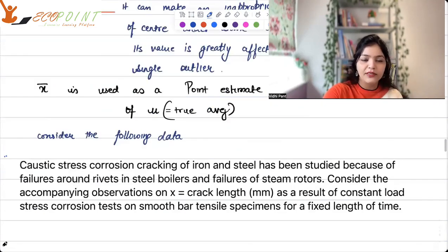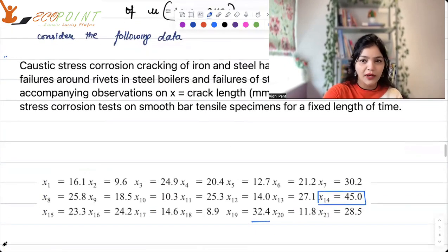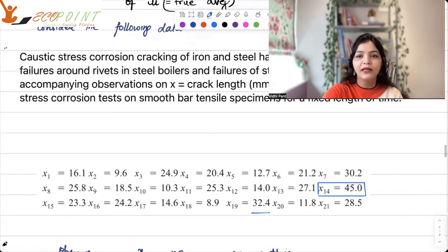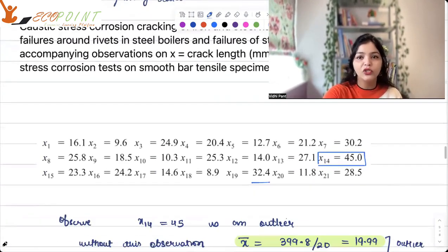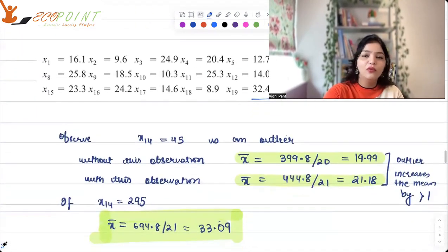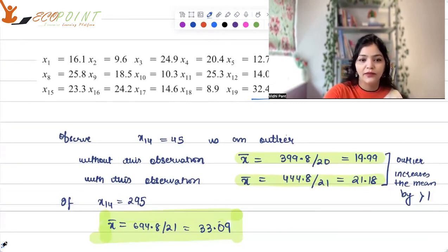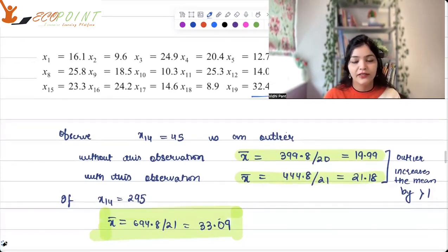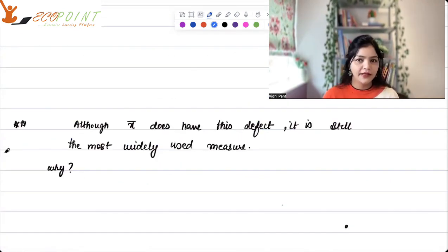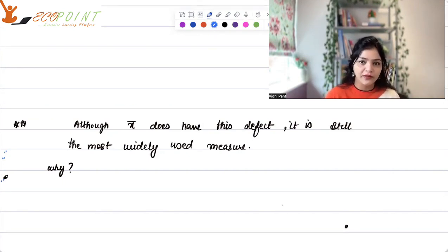But we have to be very careful when we are collecting our data, that there are no outliers in it. But mostly, what happens is that we do use x bar, because often we know that the population data is such that there won't be outliers in it. And it will be normally distributed.